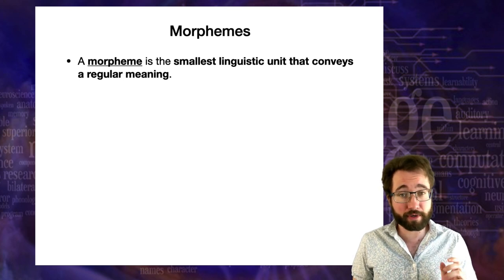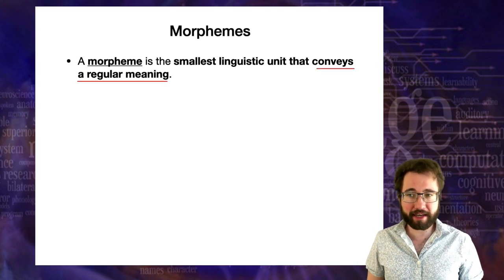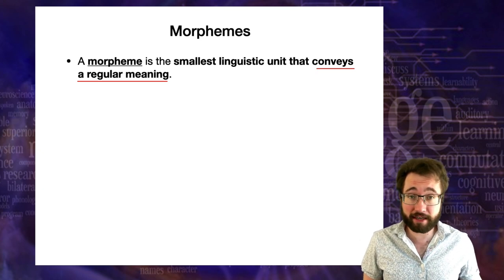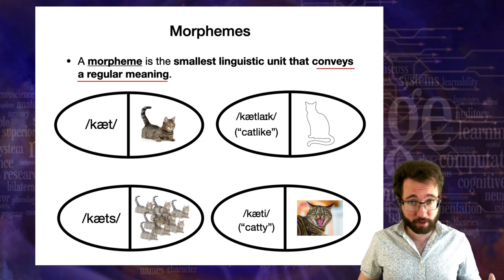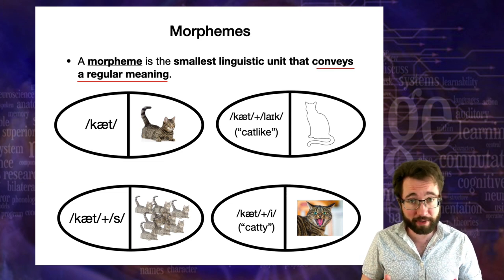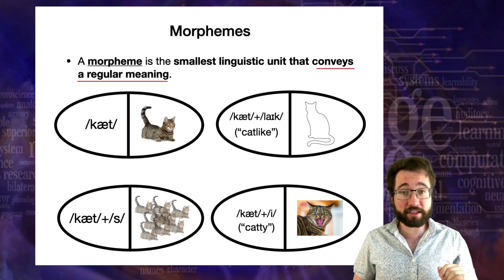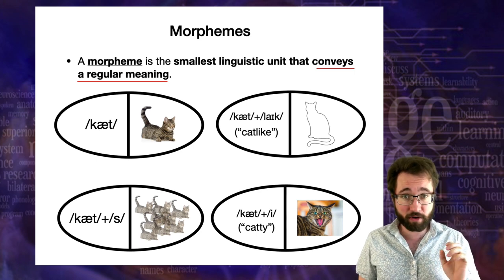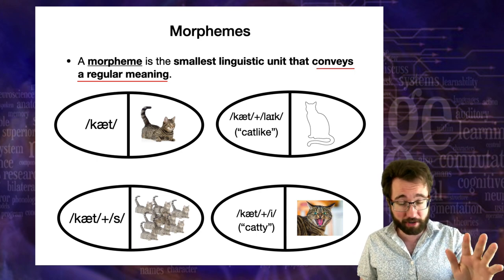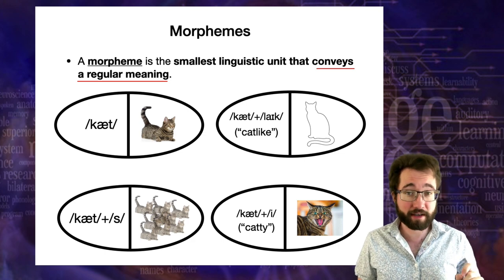What do we mean by 'conveys a regular meaning'? We can segment words based on their morphemes — they all contain the morpheme 'cat' plus other morphemes, like the plural morpheme s, or the ending 'like,' or the ending 'y.' The morpheme 'cat' appears regularly in these different signs and in each makes the same contribution to meaning — always contributing the 'feline mammal' part. That same contribution to meaning across different signs is what we mean by regularity.